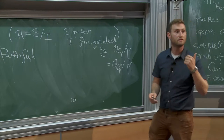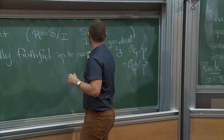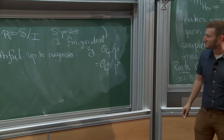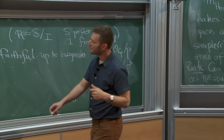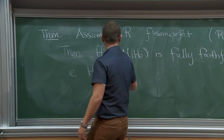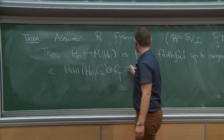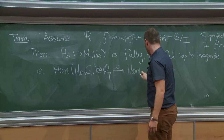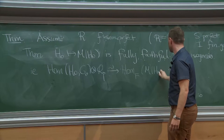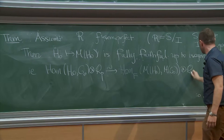The theorem states that the Dieudonné module functor is fully faithful — as a functor from p-divisible groups over R to Dieudonné modules over A_cris(R) — up to isogenies. That is, Hom(H₀, G₀) tensored with ℚ_p maps isomorphically onto Hom_φ(M(H₀), M(G₀)) tensored with ℚ_p.